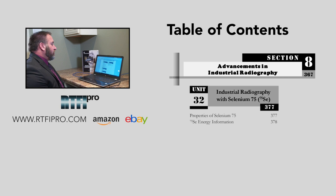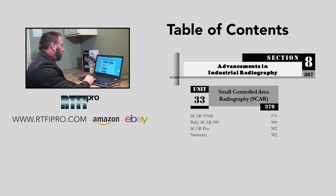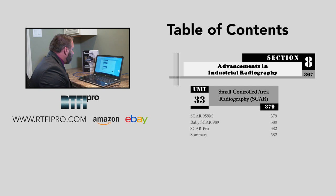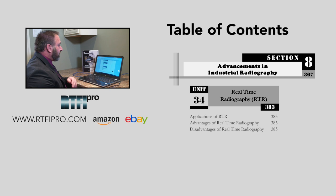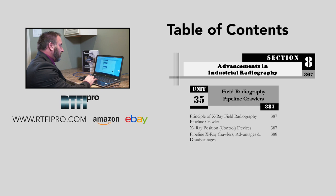Unit thirty-two covers industrial radiography with Selenium 75, including properties of Selenium 75 and Selenium 75 energy information. Unit thirty-three covers Small Controlled Area Radiography — SCAR — including SCAR 959M, Baby SCAR 989, SCAR Pro, and a summary. Unit thirty-four covers Real Time Radiography (RTR): applications of RTR, advantages, and disadvantages. Unit thirty-five covers field radiography pipeline crawlers, including principles of X-ray field radiography pipeline crawlers, X-ray position control devices, pipeline X-ray crawlers, and their advantages and disadvantages.